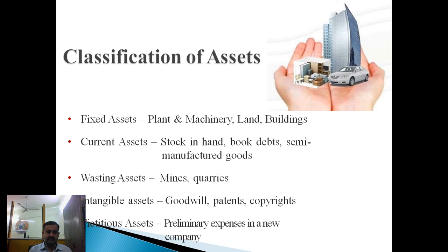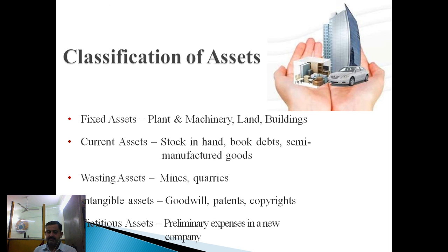Current assets include stock in hand, book debts, semi-manufactured goods, and work in progress. Wasting assets include mines and quarries. Intangible assets are not visible — examples are goodwill, patent, and copyright. Intangible means having no physical construction; examples also include discount and other similar items. Fictitious assets include preliminary expenses.